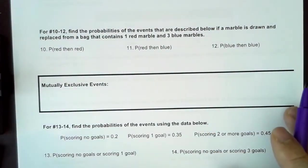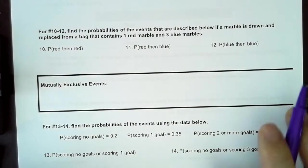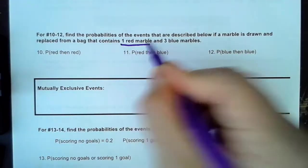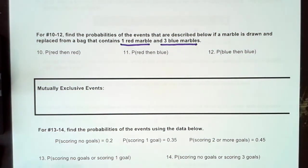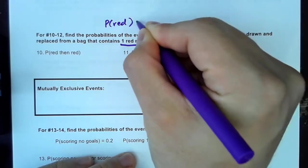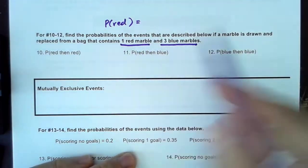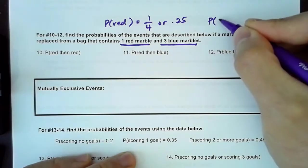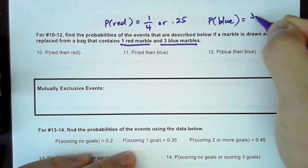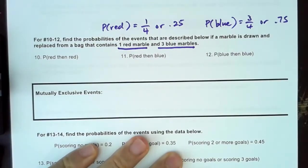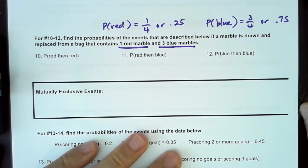Let's move down to an example with marbles. Find the probabilities of the events described below if a marble is drawn and replaced from a bag that contains one red marble and three blue marbles. The probability of red is 1 out of 4, or 0.25. The probability of blue is 3 fourths, or 0.75. Writing it as a decimal can be easier since we'll be multiplying and can use a calculator.